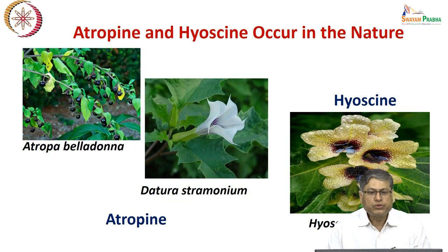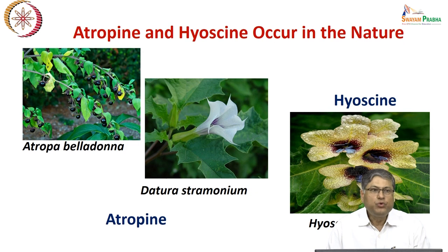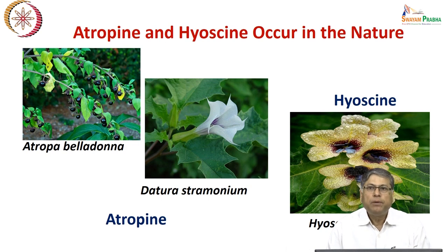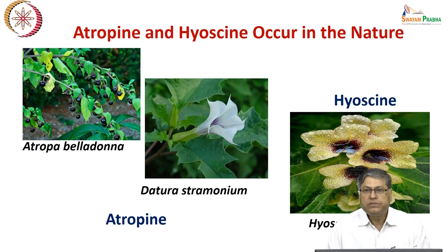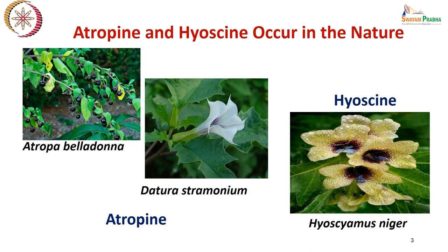Regarding the source of atropine and hyoscine, they occur naturally in the plant kingdom. Atropine occurs in two kinds of plants: Atropa belladonna and Datura stramonium. From the plant extracts of both these plants we get atropine, while hyoscine or scopolamine can be obtained from Hyoscyamus niger, which is another plant.